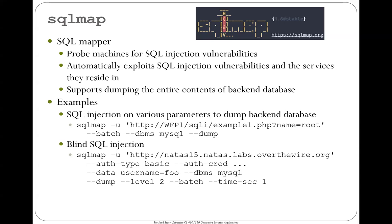What you could do when you run this particular command — for the Natas over-the-wire CTF we've been using in prior weeks — is: tell SQLmap you want to compromise this website. You have to give the Natas 15 credentials and say this username field is your injection point. Whether or not this username exists is the only bit you get back from accessing this level. Use this to do a blind SQL injection attack that dumps the entire contents of this database. This is going to take a while since it's getting one bit of information at a time, but if you let it run for about 10 to 15 minutes, you'll get the actual backend database for Natas 15. This is something you can hopefully automate via the LLM.